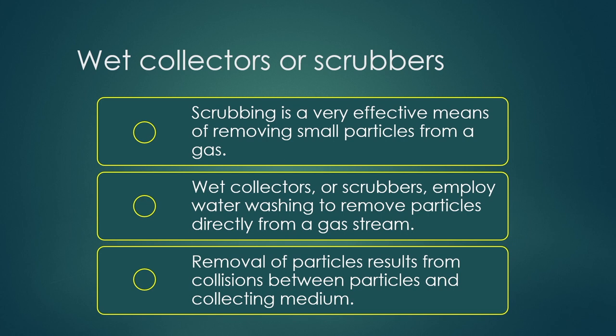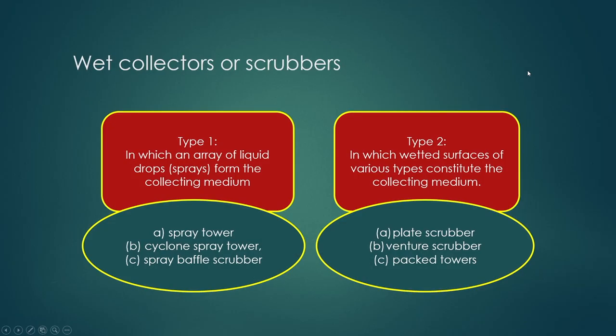To achieve collision between particles and the liquid medium, the liquid must be formed into droplets. The liquid is supplied through a mechanical provision to produce droplets. There are several mechanisms for this, and various types of equipment are used for particle collection by liquid or solvent.